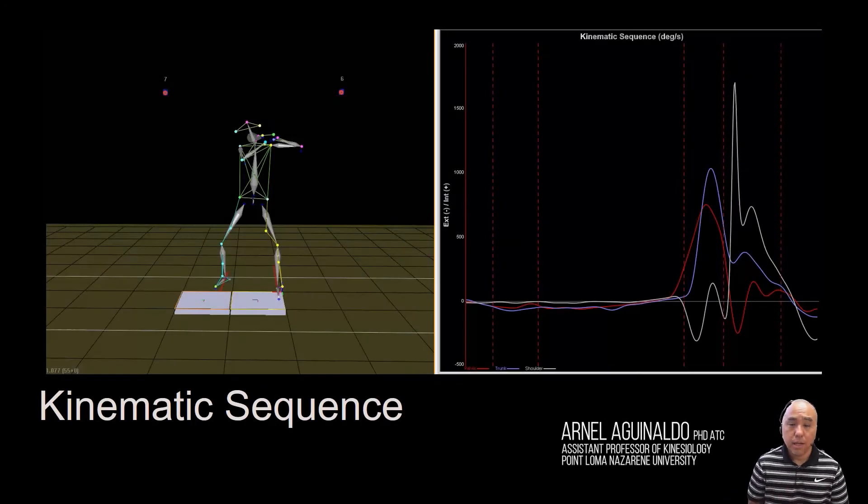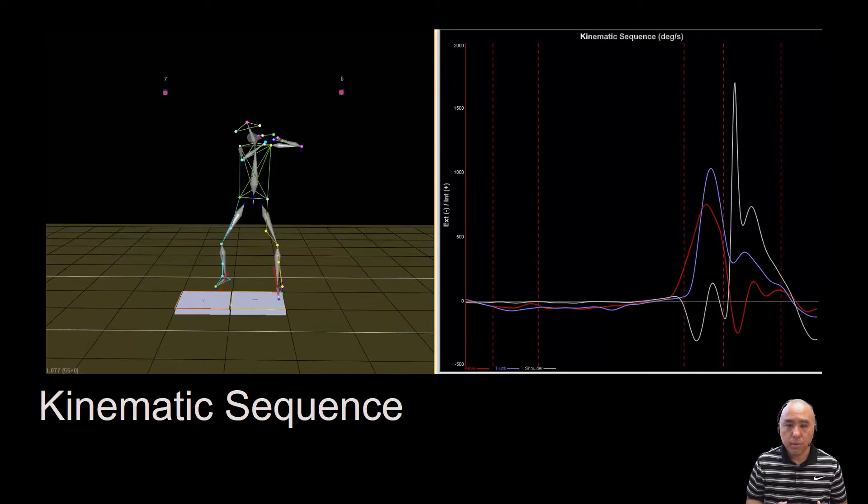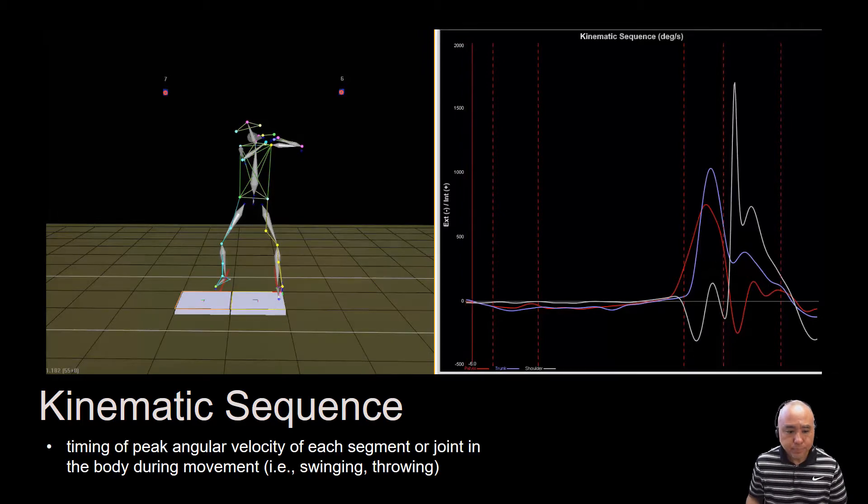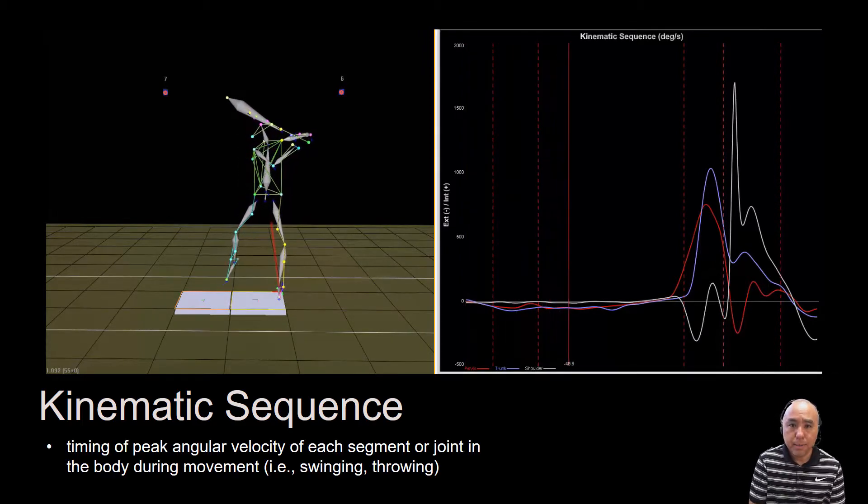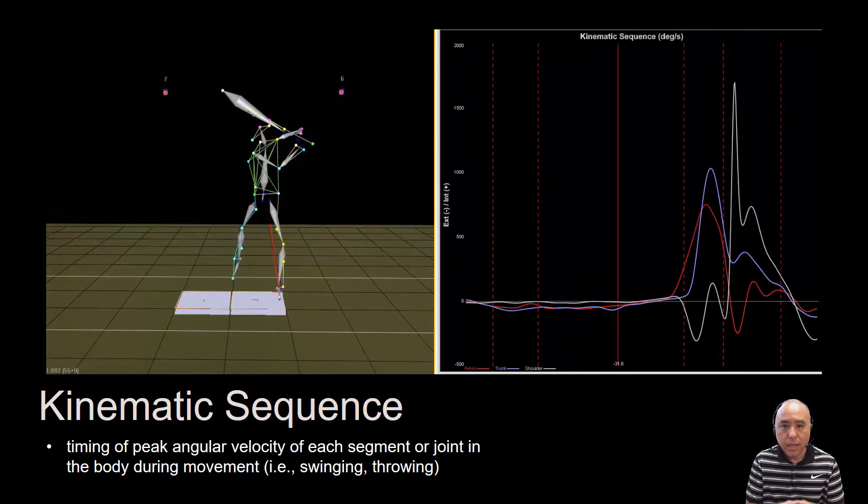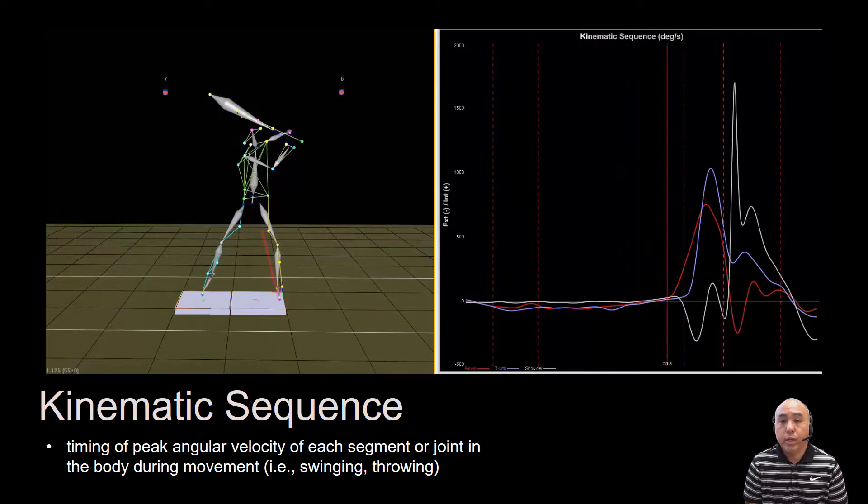So now let's talk about the kinematic sequence. This is arguably one of my favorite topics to discuss, simply because I work a lot in baseball in terms of my research, whether it's with baseball hitters or baseball pitchers, where the kinematic sequence is an important aspect of their mechanics. The kinematic sequence refers to the timing in peak angular velocity of each relevant segment or joint that's involved with the movement task.